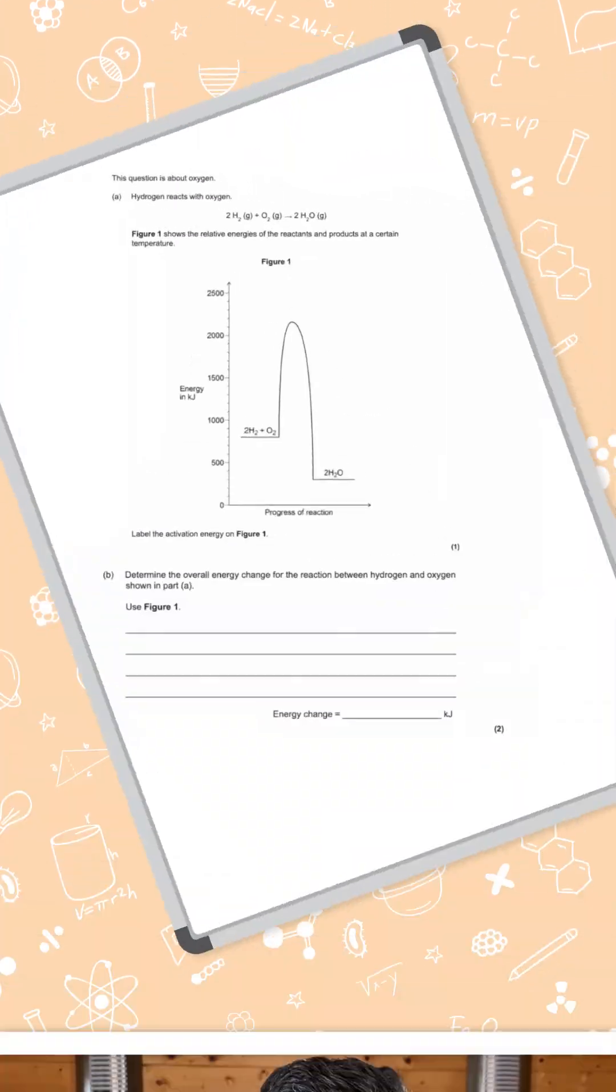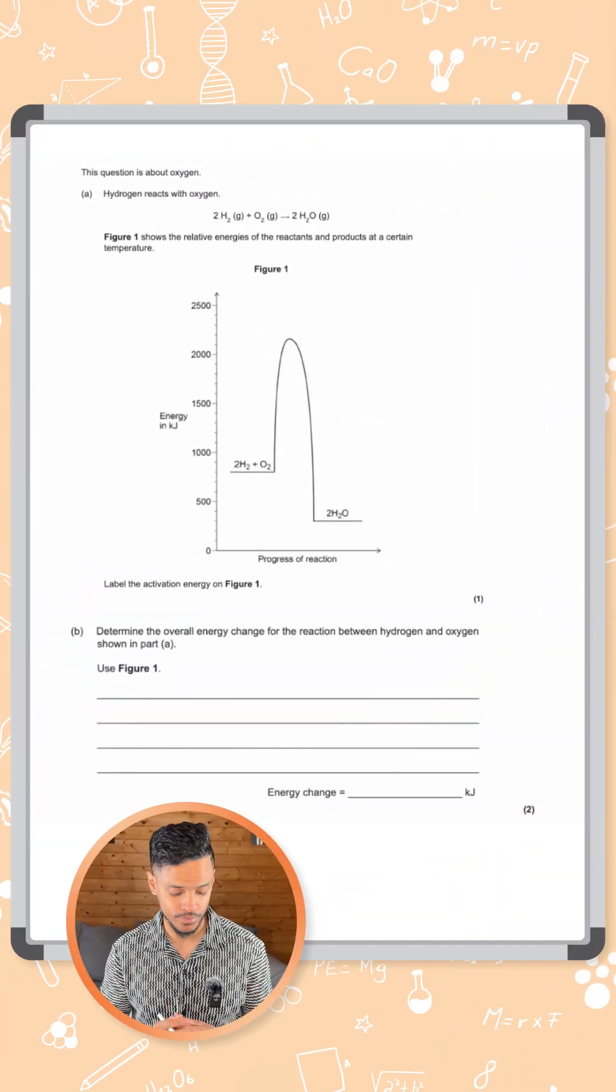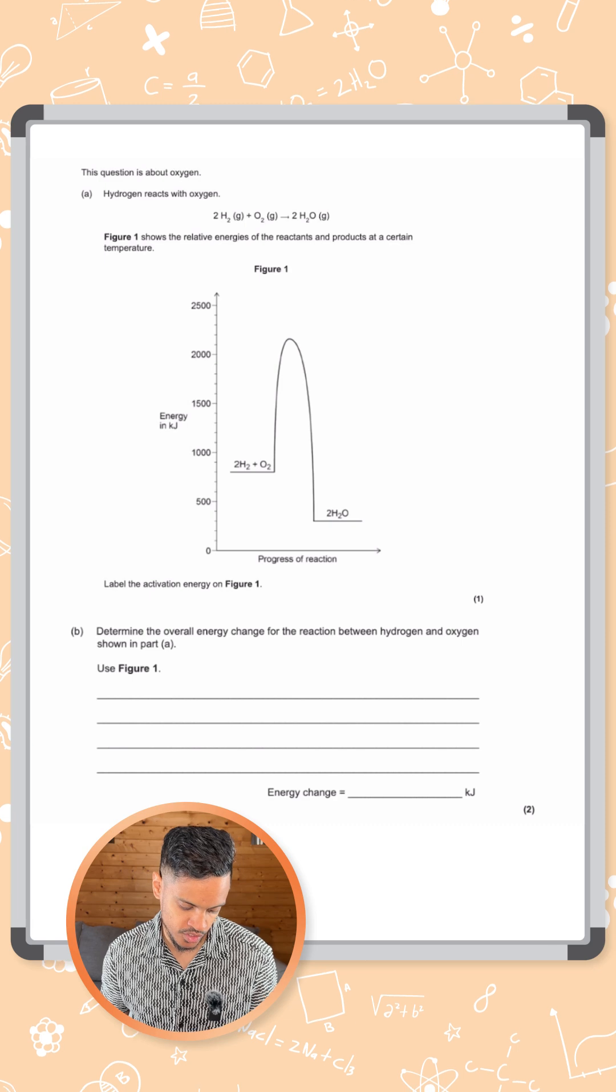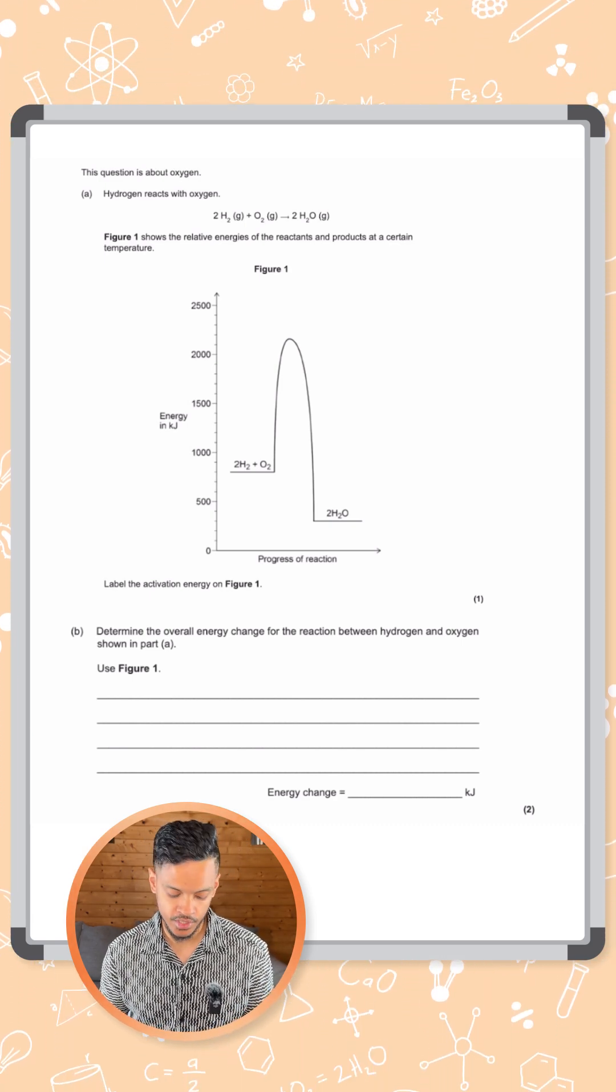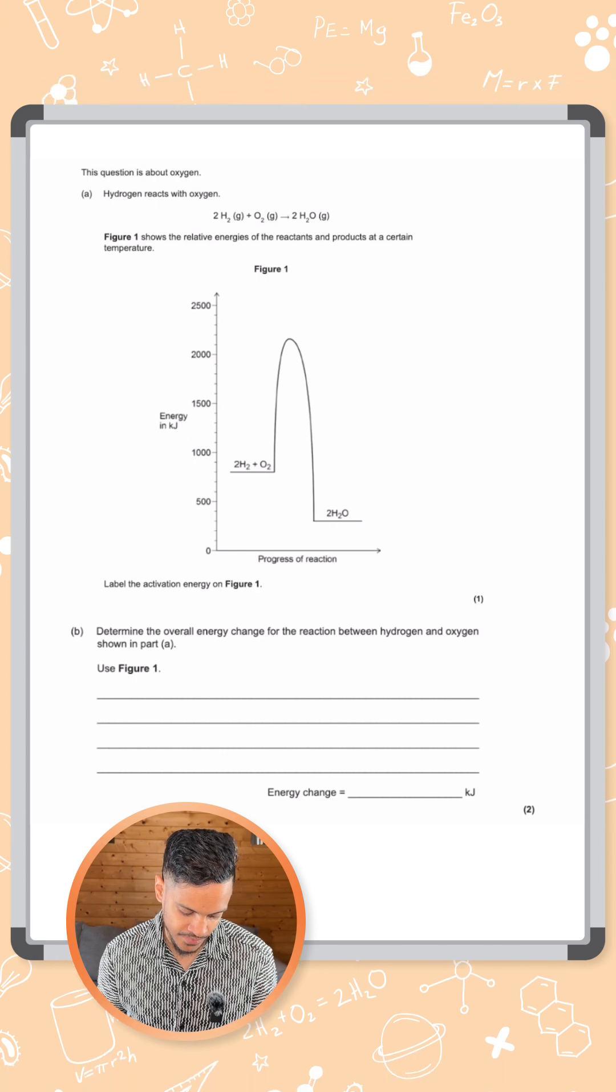Look at this guys, we've got a calculation question here on reaction profiles. The question is about oxygen and hydrogen - hydrogen reacts with oxygen in the following equation, and they've given us the equation here. Figure one shows the relative energies of the reactants and products at a certain temperature.